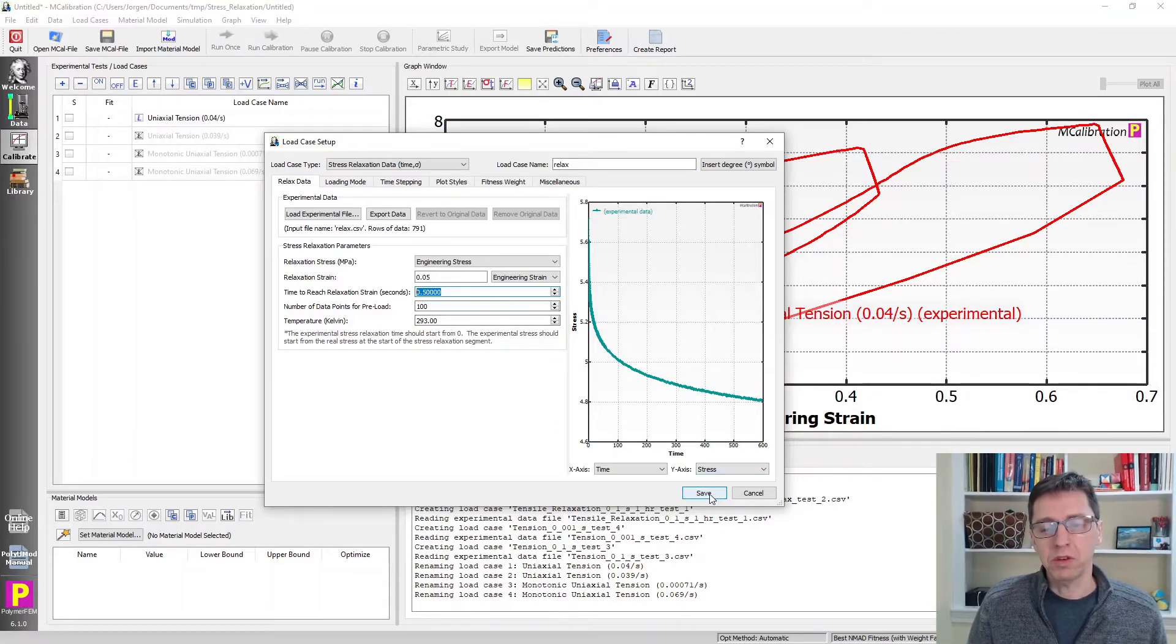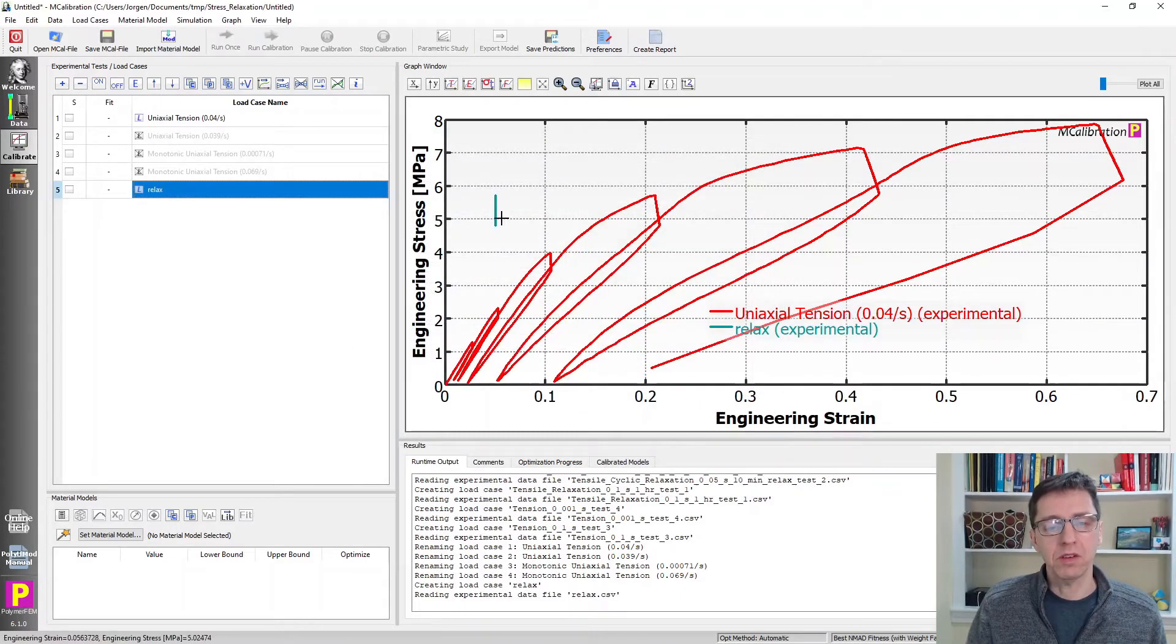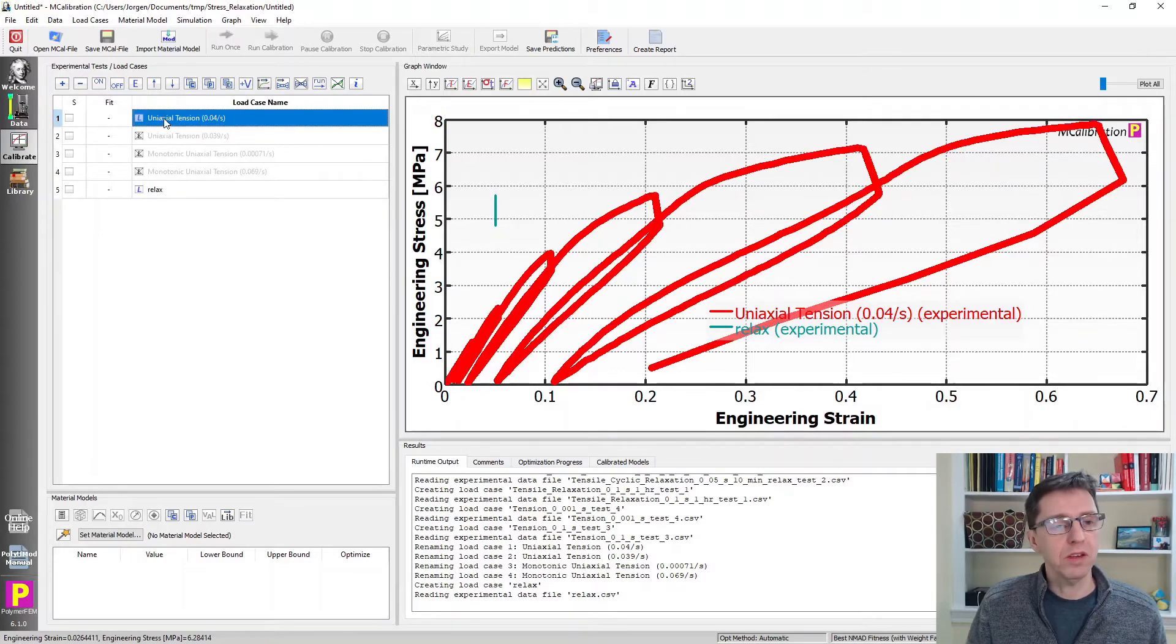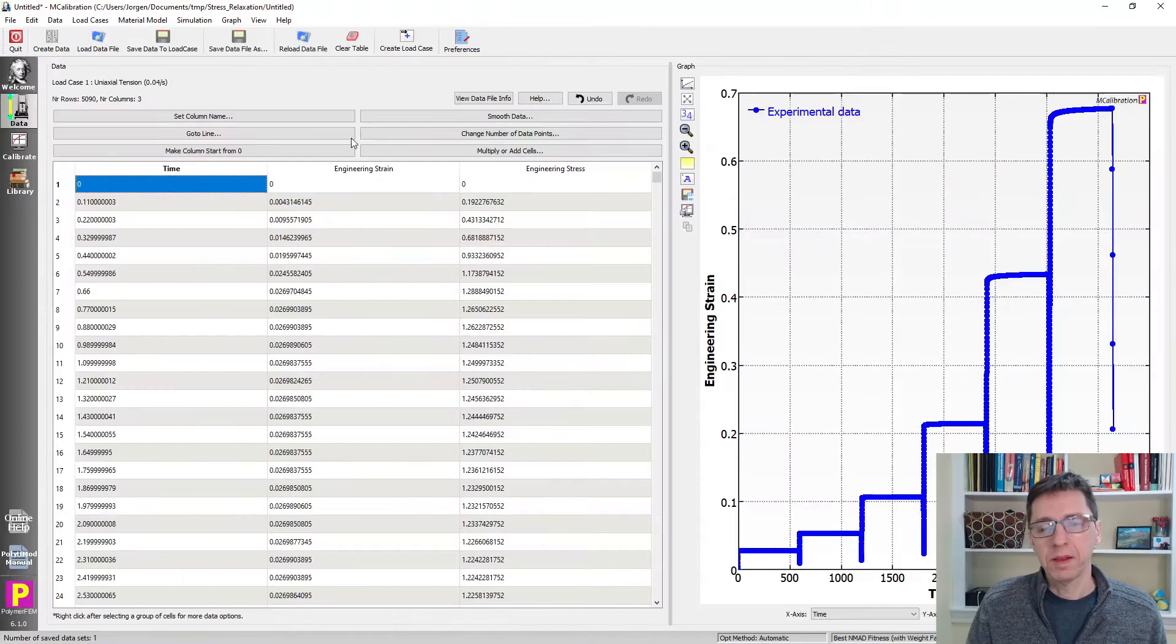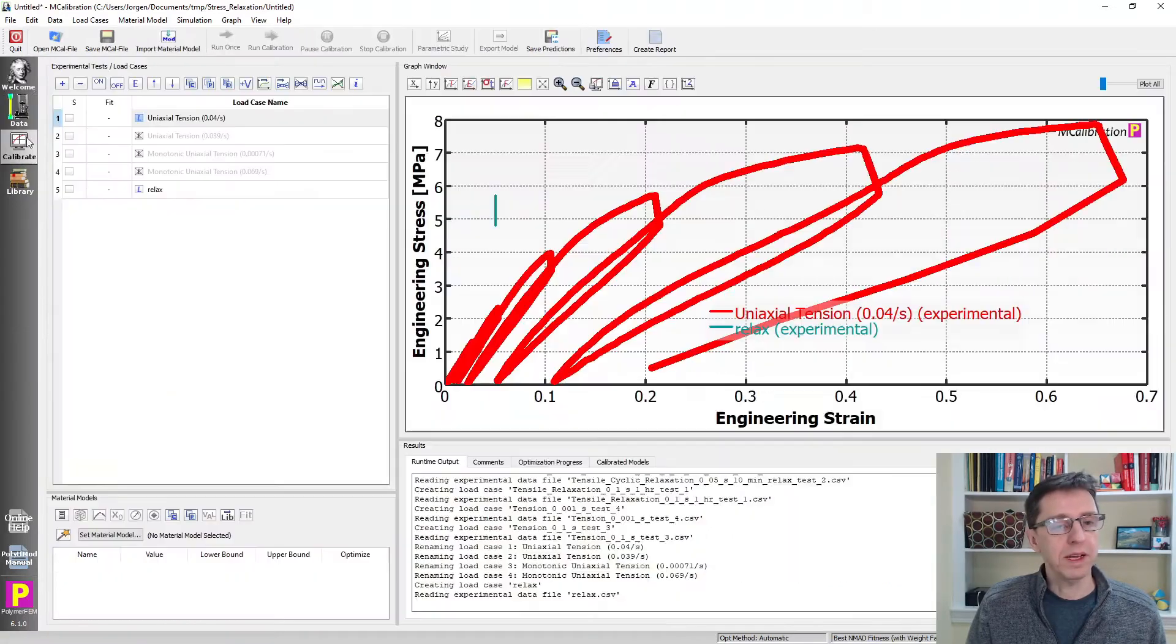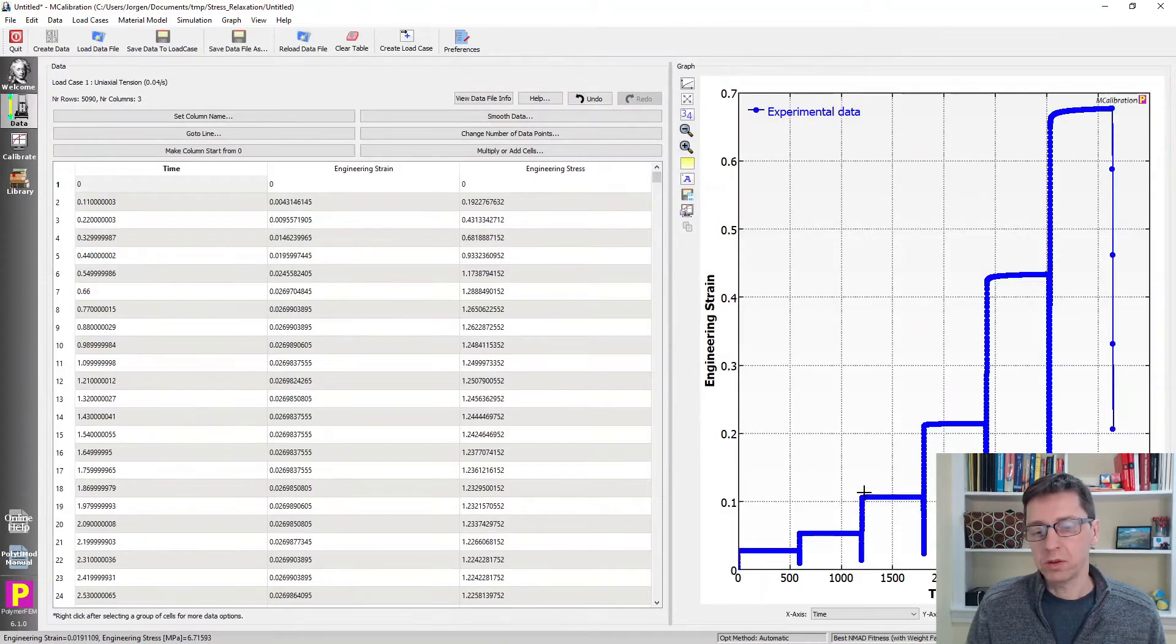Now we have to specify what was the relaxation strain and how long time did it take for the test machine to reach that strain. I'll keep these default values here, but it's not quite right. So we're going to have to modify this. I'll go back to this load case, click on Edit Experimental Data, and figure out this is about 20% strain, the one we're looking for.